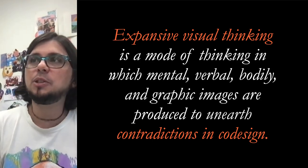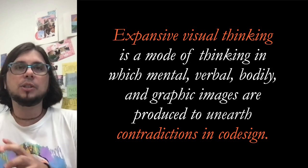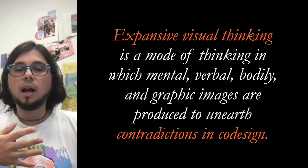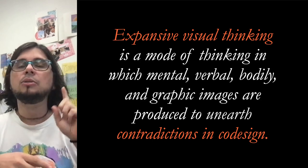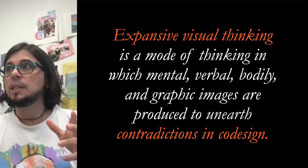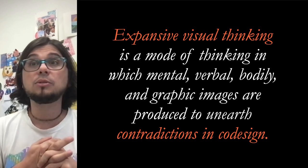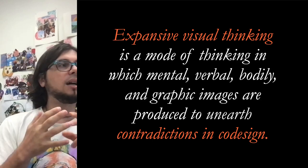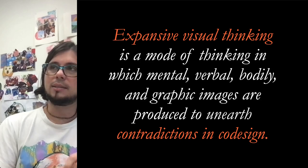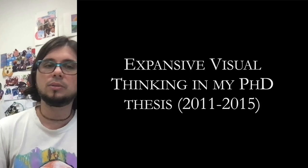So expansive visual thinking is a mode of thinking in which mental, verbal, bodily, and graphic images are produced — that's the same definition we saw before. However, there's something new here. The purpose of expansive visual thinking is not just any kind of knowledge — it's really about unearthing contradictions in co-design. We are trying to find what is hampering our process, what is bothering us, and then try to make that into a visual image and work it out using those images.